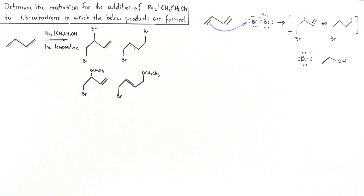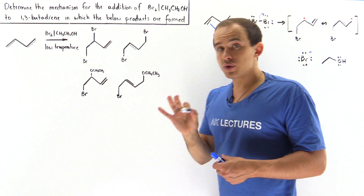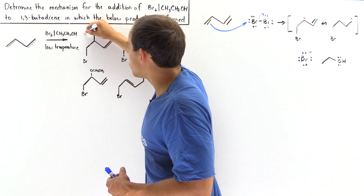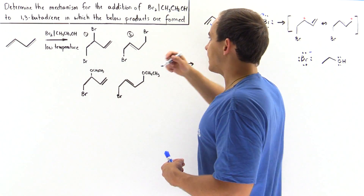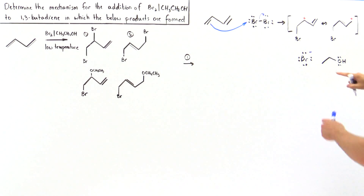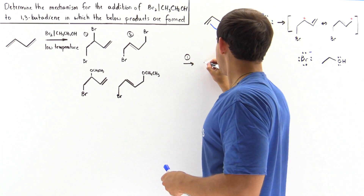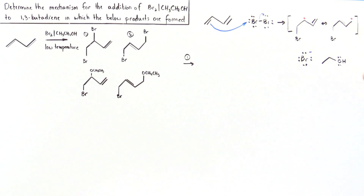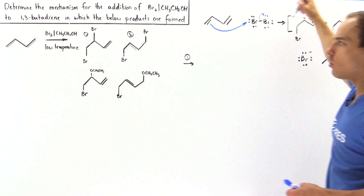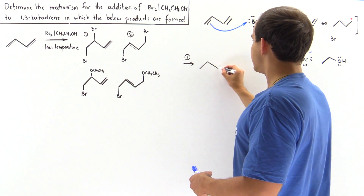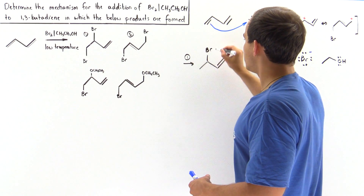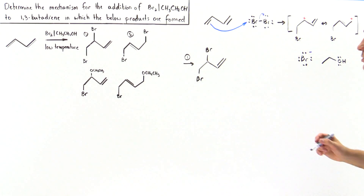The question is whether the bromide or the ethanol will attack our positive charges. Let's call this product 1 and this product 2. For the second step forming product 1, this bromide molecule uses one of its lone pairs of electrons and attacks the open 2p orbital of this carbon, forming the following molecule. We have the pi bond here, one bromine here, and the second bromine here. This is product 1.